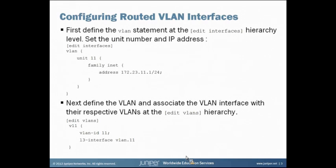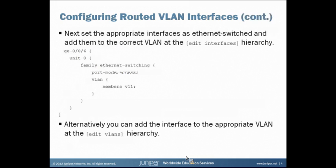To configure RVIs, we first define the VLAN statement at the Edit Interfaces hierarchy. We set the unit number and IP address. Next, define the VLAN and associate the Layer 3 interface with their respective VLANs at the Edit VLANs hierarchy.